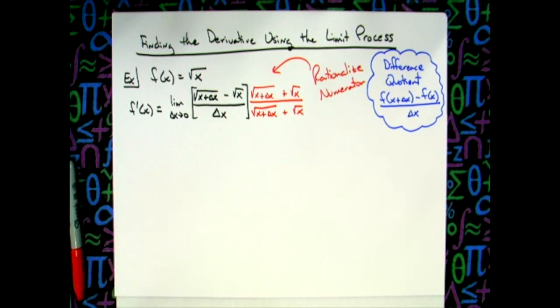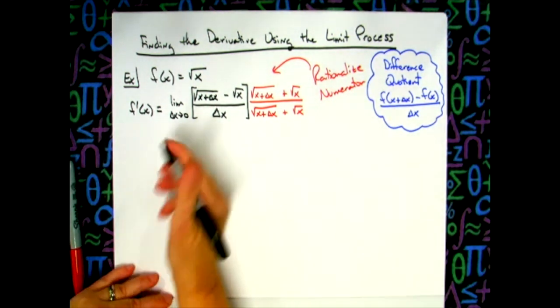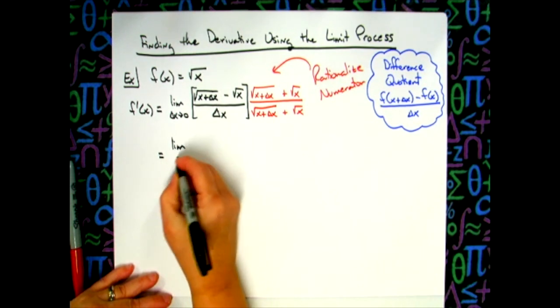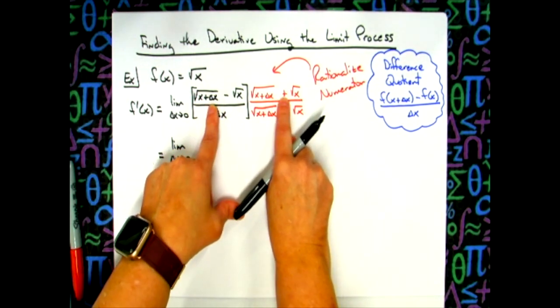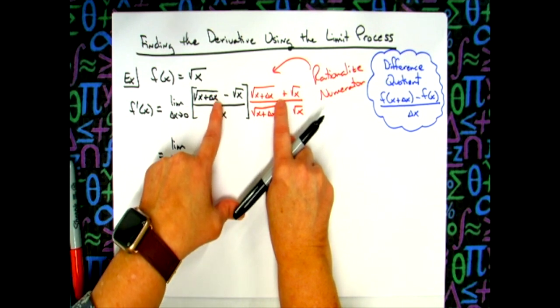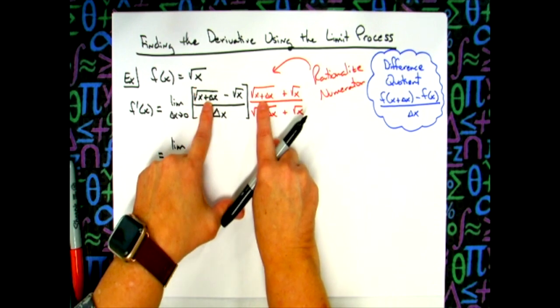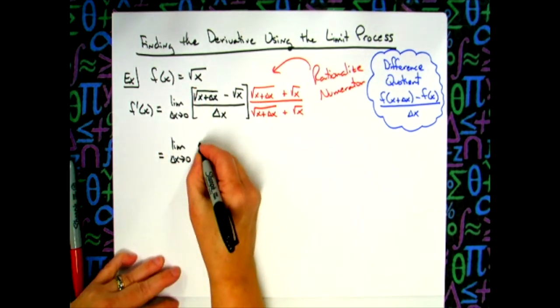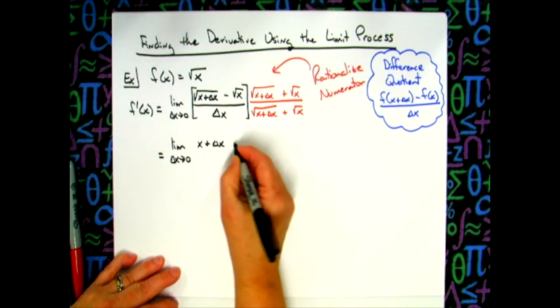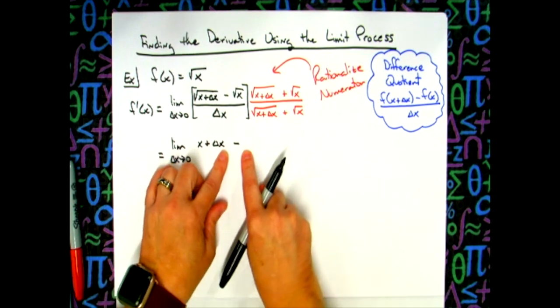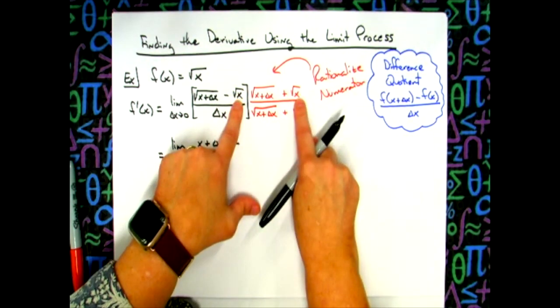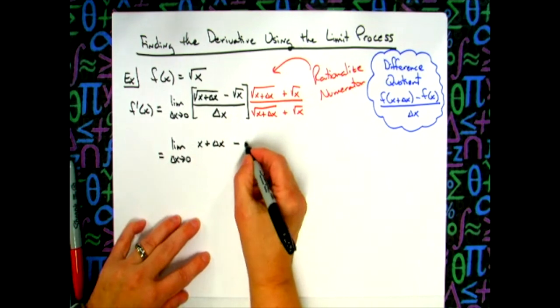Now when I go to my next step, I'm simply going to be simplifying here. I still have my limit notation out in front, so the limit as delta x approaches zero. When I multiply this binomial times this binomial, the whole point of using that conjugate is so that you recognize this is the factored form of the difference of two squares. So I'm going to square my first term, which will result in x plus delta x, minus the square of the second term, which will give me x.